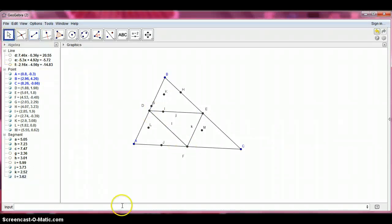So then once we've done that, we need to find the midpoints again. So midpoint of J, midpoint of K, and midpoint of L. And then we can hide our labels once again.